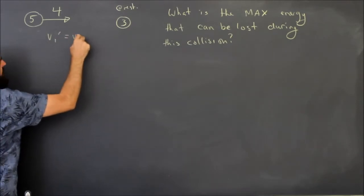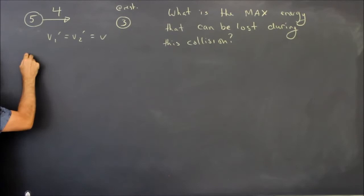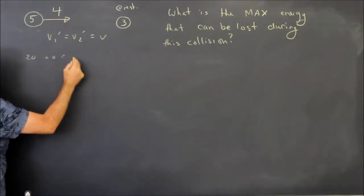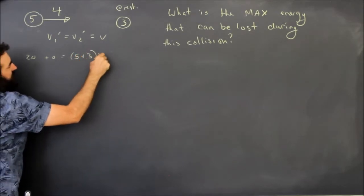So that's when V1 prime equals V2 prime. So we'll look at momentum because that's really easy. We've got 5 times 4 plus 0 equals 5 plus 3 times V, the speed after the collision.